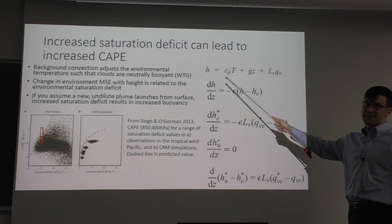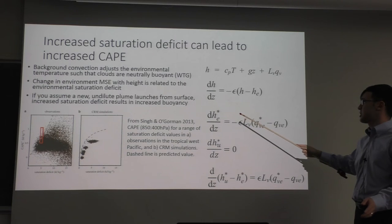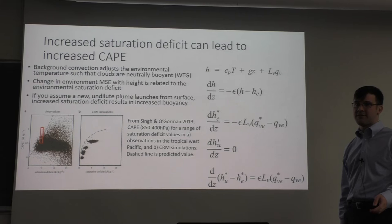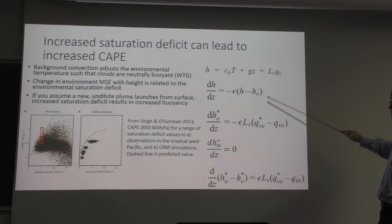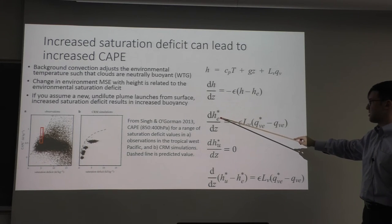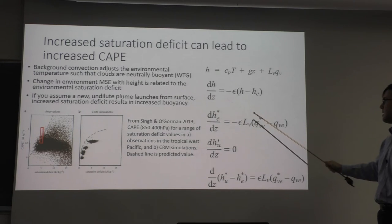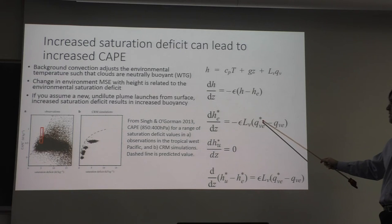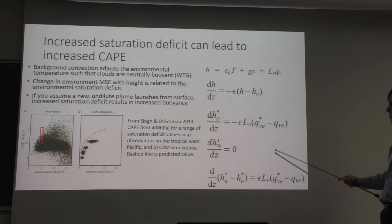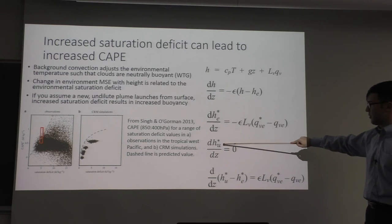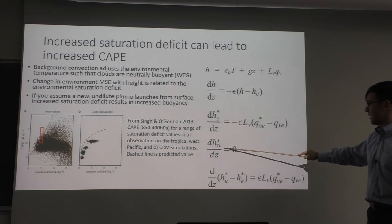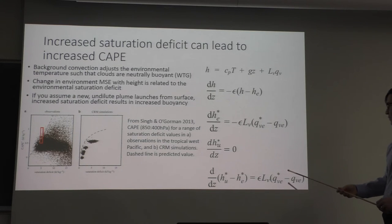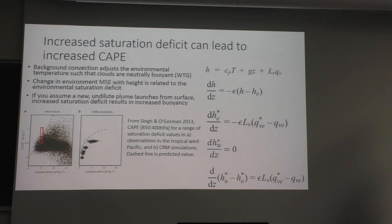Formally, starting with the plume equation: a saturated plume has H equal to H* (moist static energy equals saturation moist static energy). H* of the plume equals H* of the environment. Since both have the same temperature, we reduce the equation to water vapor terms. Substituting, we get an equation for how temperature in the free troposphere changes based on the difference between the environment's saturation water vapor mixing ratio and its actual mixing ratio. Considering a new non-entraining updraft plume and subtracting it from the previous plume to account for buoyancy: a greater saturation deficit gives greater buoyancy, so greater saturation deficit leads to greater CAPE.